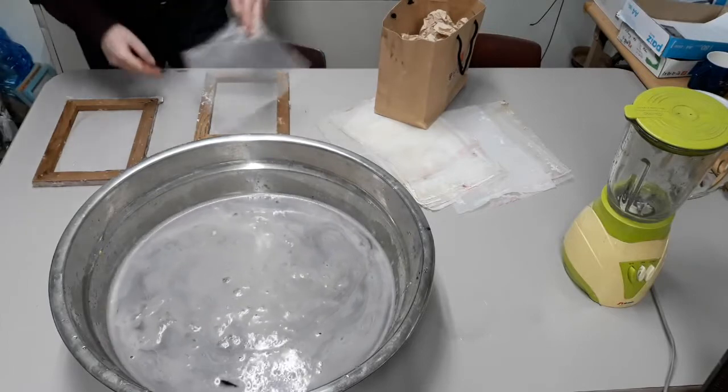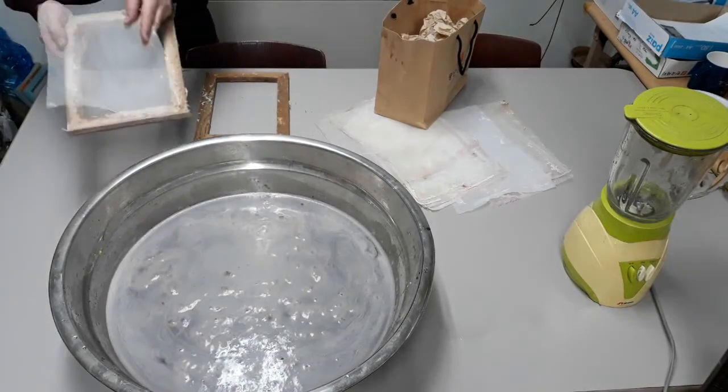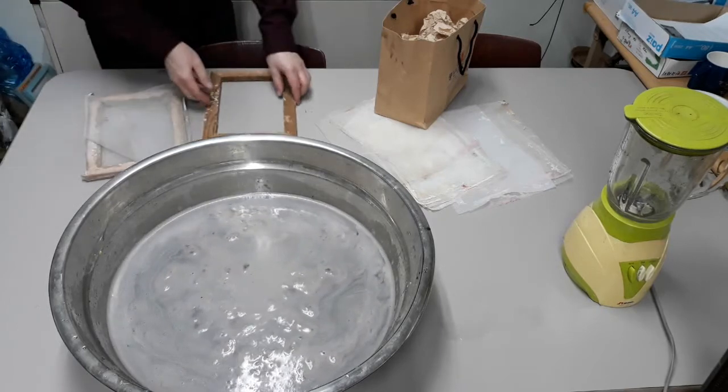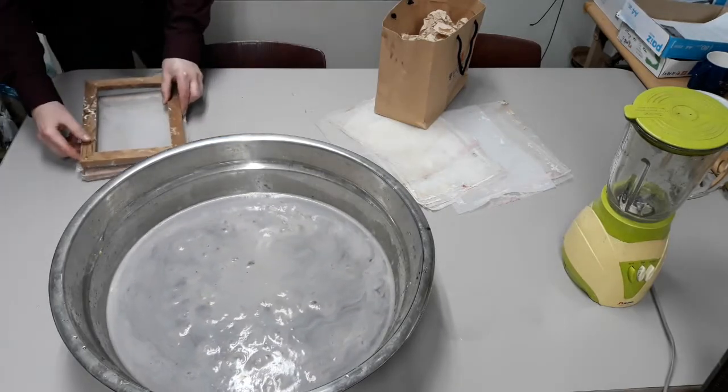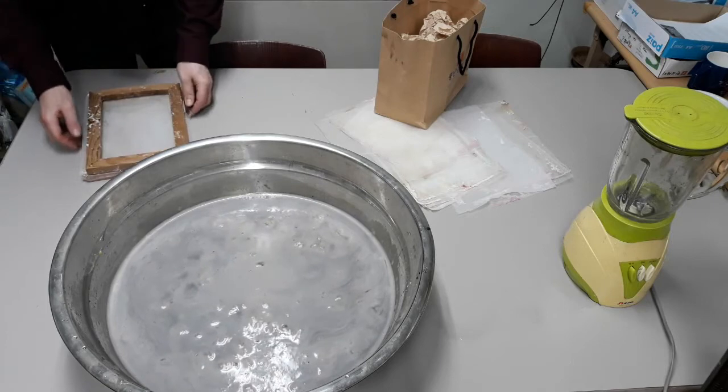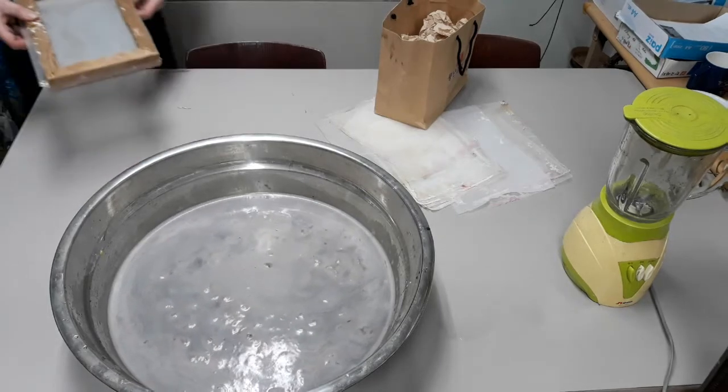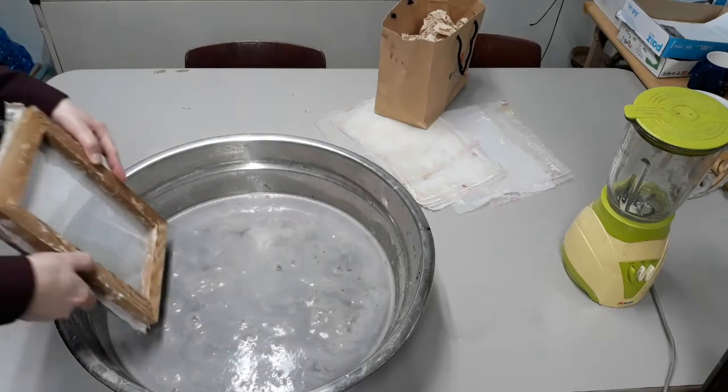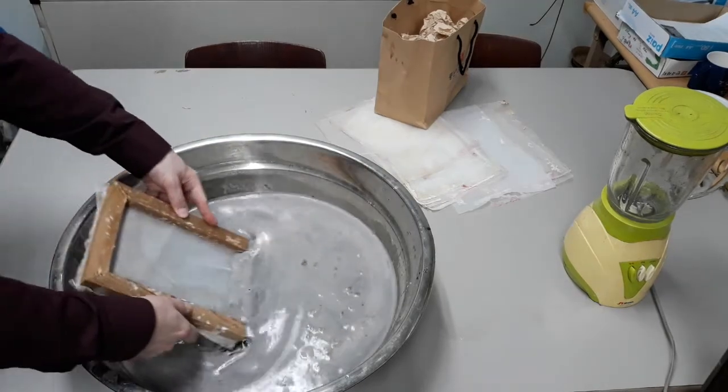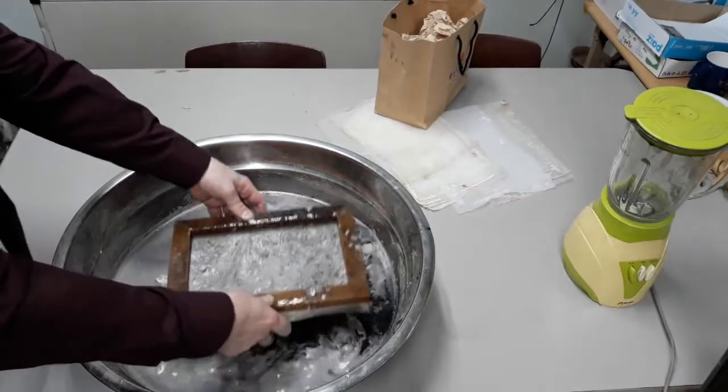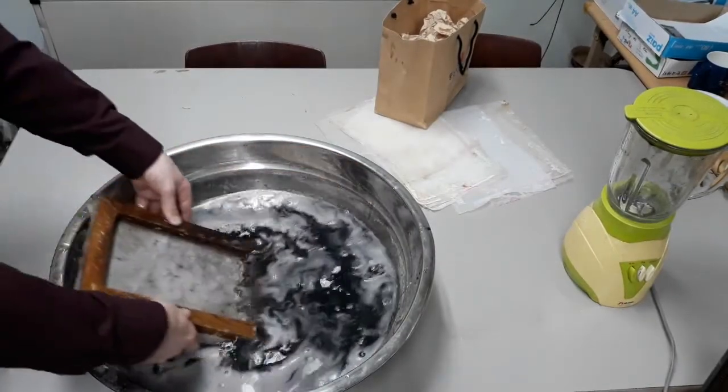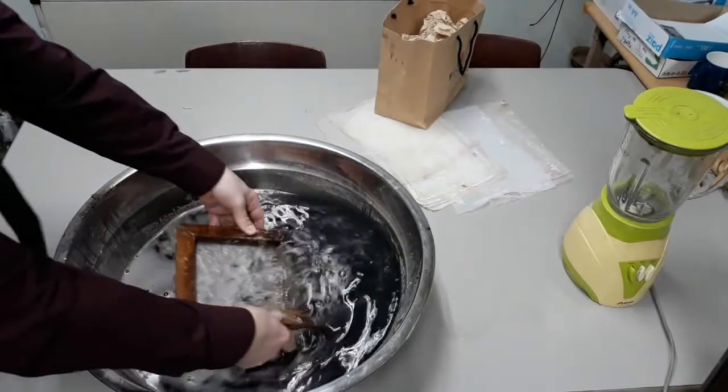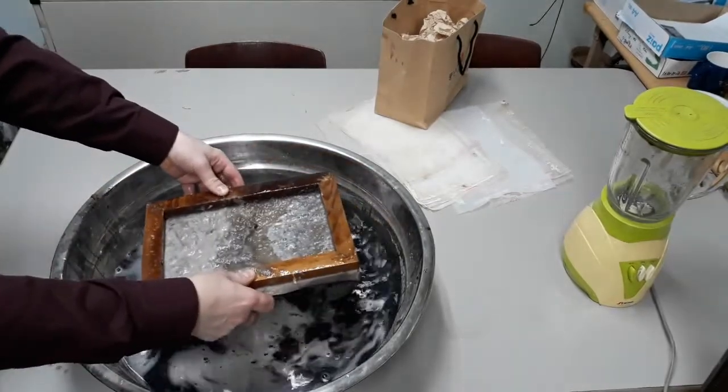I'm taking one of my screens and I'm putting it on top of the other screen and I'm using the frame to create the right size of paper. What we're going to do now is a dip method. We're going to go in to our fibers, let the fibers collect, and pull up. We can do this several times to get enough fiber on there.